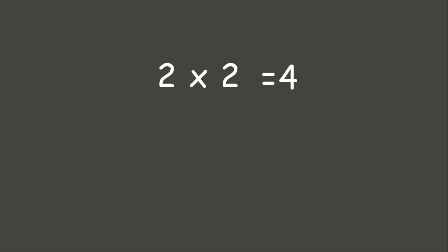Positive 2 times positive 2 is positive 4. Now let's check our answer using our counters. We have our multiplicand positive 2, so let us put 2 positives. And we need to multiply it to positive 2, so let us make 2 groups of 2 positives. If we count them all together, we get 4 positives.